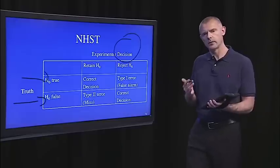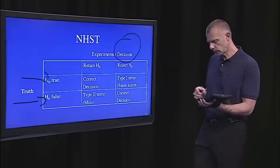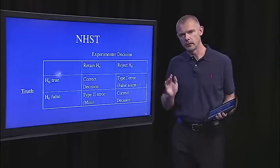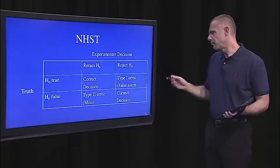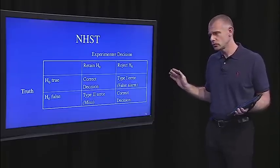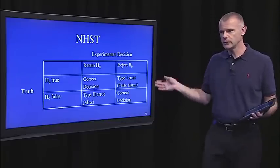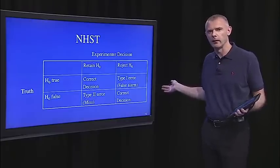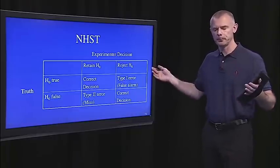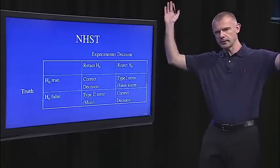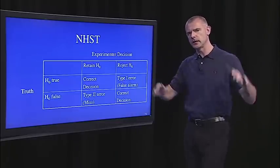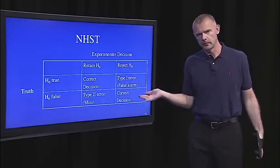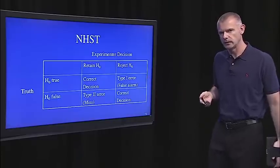So, if you're living in the world where the null is true, and you retain the null, then great. You made the correct decision. But if you're living in the world where the null is true, and you reject, then that's what statisticians call a type one error, or a false alarm. You've said, hey, look, I got this significant correlation, and I got this significant effect. When, in fact, in the population, that effect doesn't really exist.